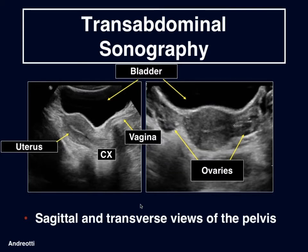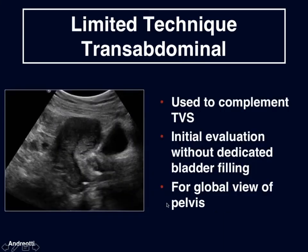Here we have our typical transabdominal image showing the distended bladder with the uterus behind the bladder. In our transverse image, once again the uterus, and we can see the ovaries on either side of the uterus. A limited transabdominal technique may also be used to complement transvaginal sonography — an initial evaluation without dedicated bladder filling, which has been found very useful to see a global view of the pelvis before performing a more detailed transvaginal examination.